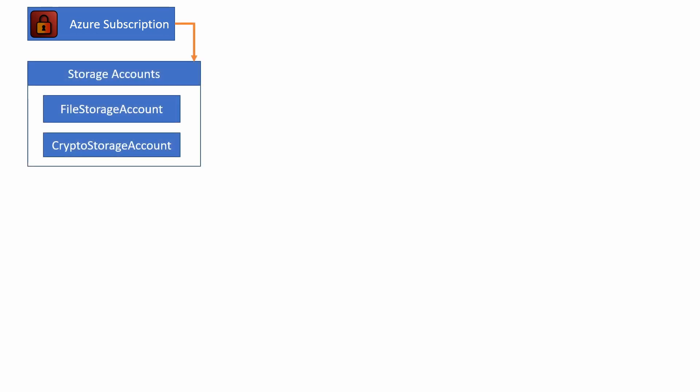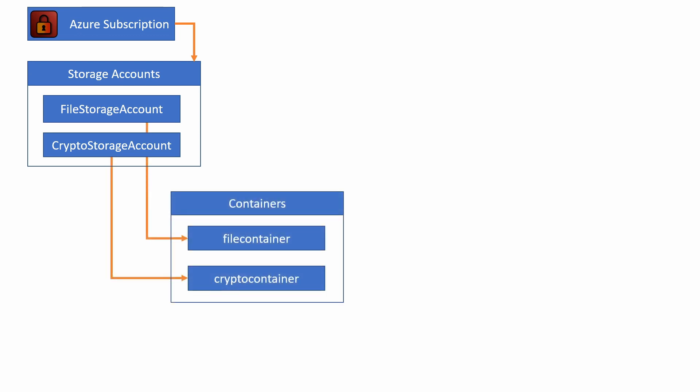To be able to store data in Azure, we need an Azure subscription. Blob Storage is organized into three types of resources. The first one is storage accounts. A storage account provides a unique namespace in the entire Azure cloud for your data, and every object that you store in Azure storage has an address that includes your unique storage account name. The data inside the account are stored into containers, and a container is similar to a directory in a file system.